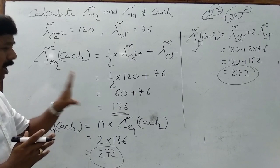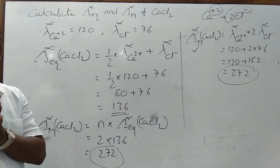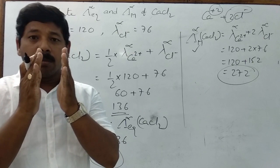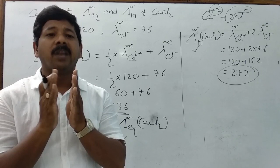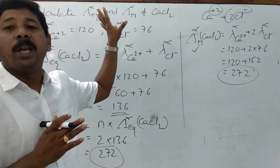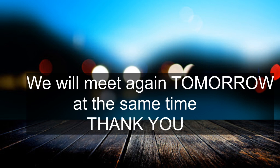This is Kohlrausch's Law of Independent Migration of Ions: the molar conductance of an electrolyte at infinite dilution equals the sum of its ionic conductivities. There are some applications of this law which will be explained in the next class. Thank you.